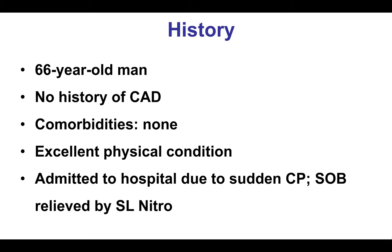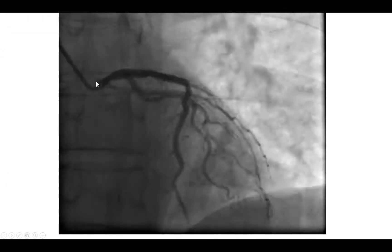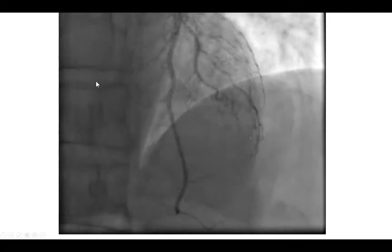The patient was a 66-year-old man with no previous history of coronary artery disease who developed sudden onset chest pain and dyspnea, and was found to have ST segment elevation in the lateral precordial leads as well as the inferior leads. Therefore, the cath lab was activated and the patient underwent emergent coronary angiography.